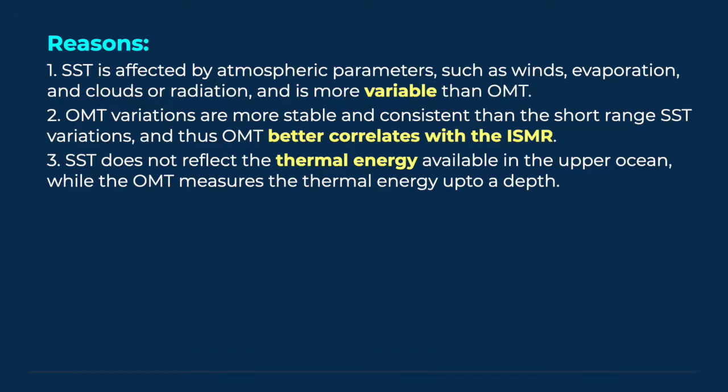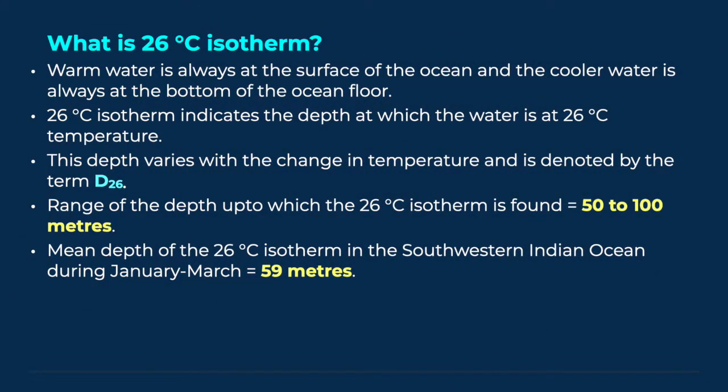SST does not reflect the thermal energy available in the upper ocean, while OMT measures the thermal energy up to a depth. The 26 degree centigrade isotherm indicates the depth at which the water is at 26 degree centigrade temperature. This depth varies with the change in temperature and is denoted by the term D26. The range of depth up to which this isotherm is found is between 50 to 100 meters.